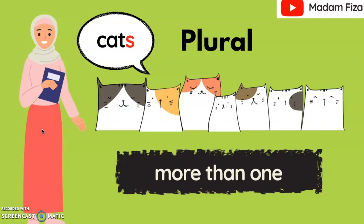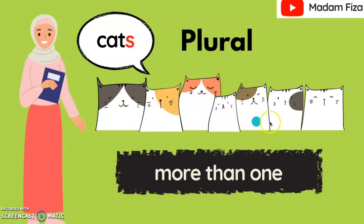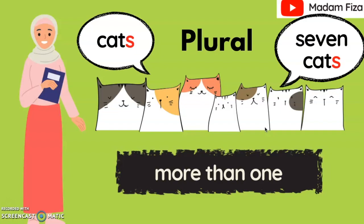Now, let's count the cats together. One, two, three, four, five, six, seven. So we have seven. Seven apa? So, we can say seven cats.